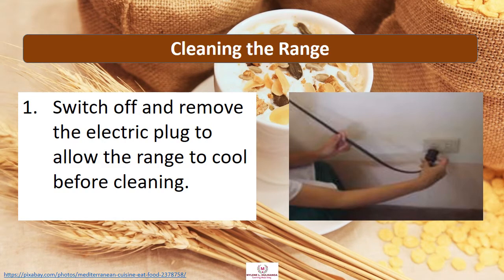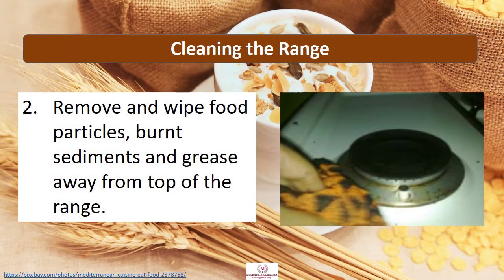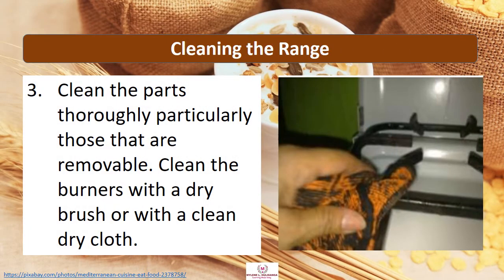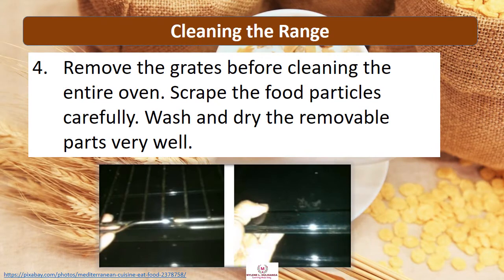The following are the steps in cleaning the range. Number 1: Switch off and remove the electric plug to allow the range to cool before cleaning. Number 2: Remove and wipe food particles, burnt sediments, and grease away from the top of the range. Number 3: Clean the parts thoroughly, particularly those that are removable. Clean the burners with a dry brush or with a clean dry cloth. Number 4: Remove the grates before cleaning the entire oven. Number 5: Scrape the food particles carefully. Wash and dry the removable parts very well.